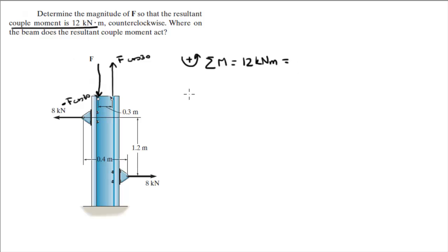And this is equal to two couple moments. It's the 8 kilonewton couple moment, which is the moment produced by this couple, which is given by them, 8 kilonewtons multiplied by the distance, 1.2 meters.